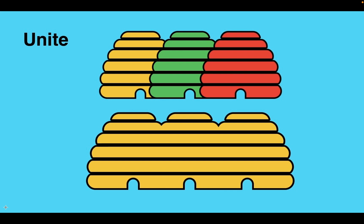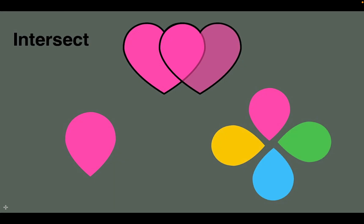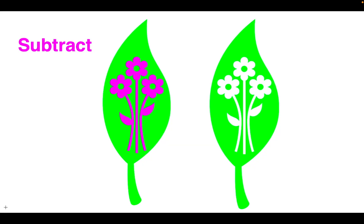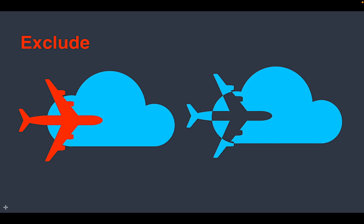In the Freeform app, you can combine shapes to create a new shape by uniting, intersecting, subtracting, and excluding. We'll examine the four options individually and see what effects you can create by using each option.